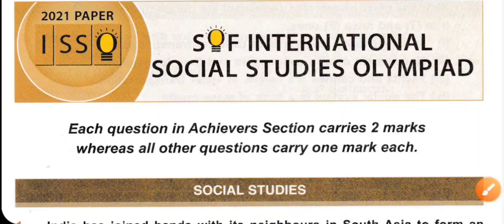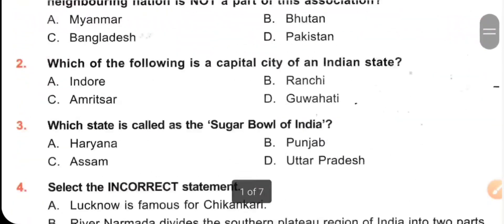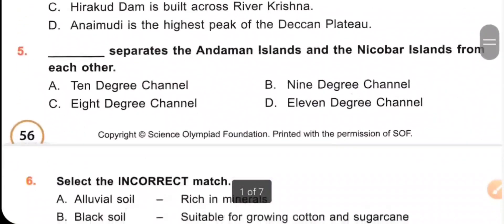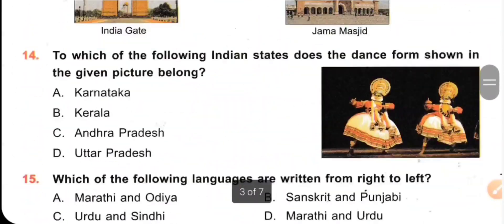Hi my dear kids, in this video we are going to solve the remaining questions, that is from 21 to 35, of the Class 4 SOF International Social Studies Olympiad 2021 paper. In our previous video we already solved questions 1 to 20. So let's see.